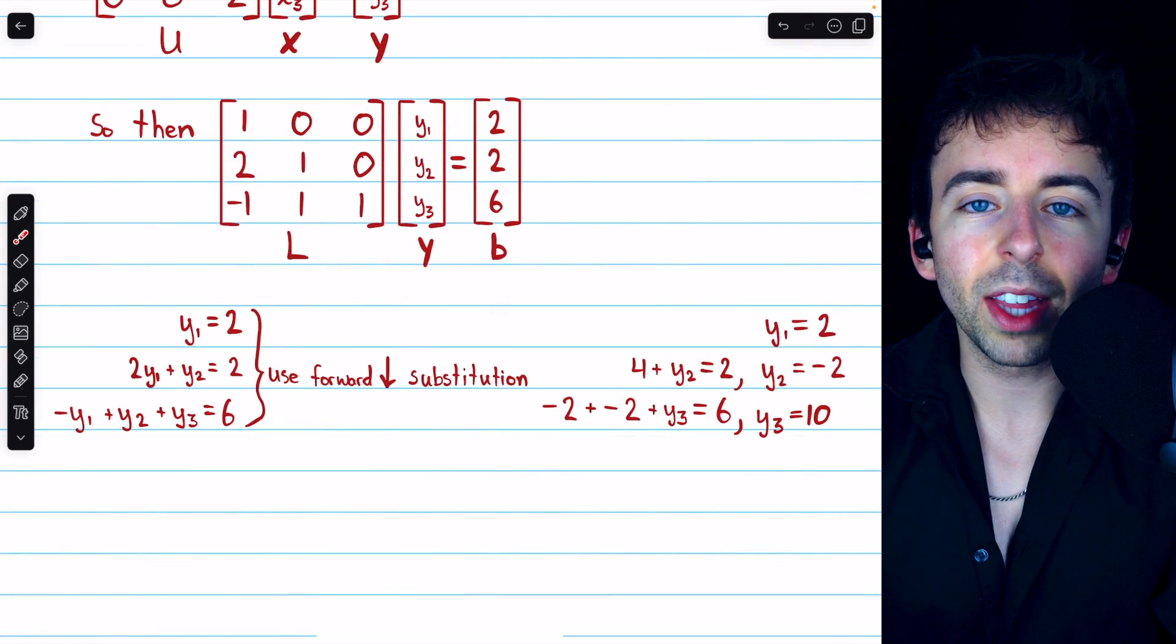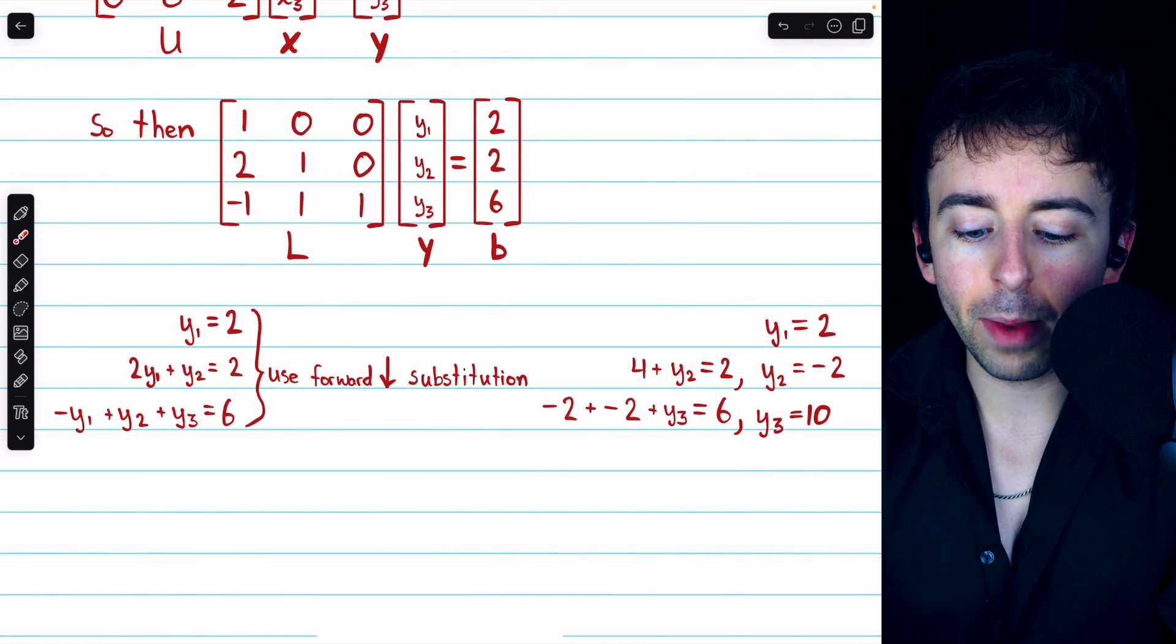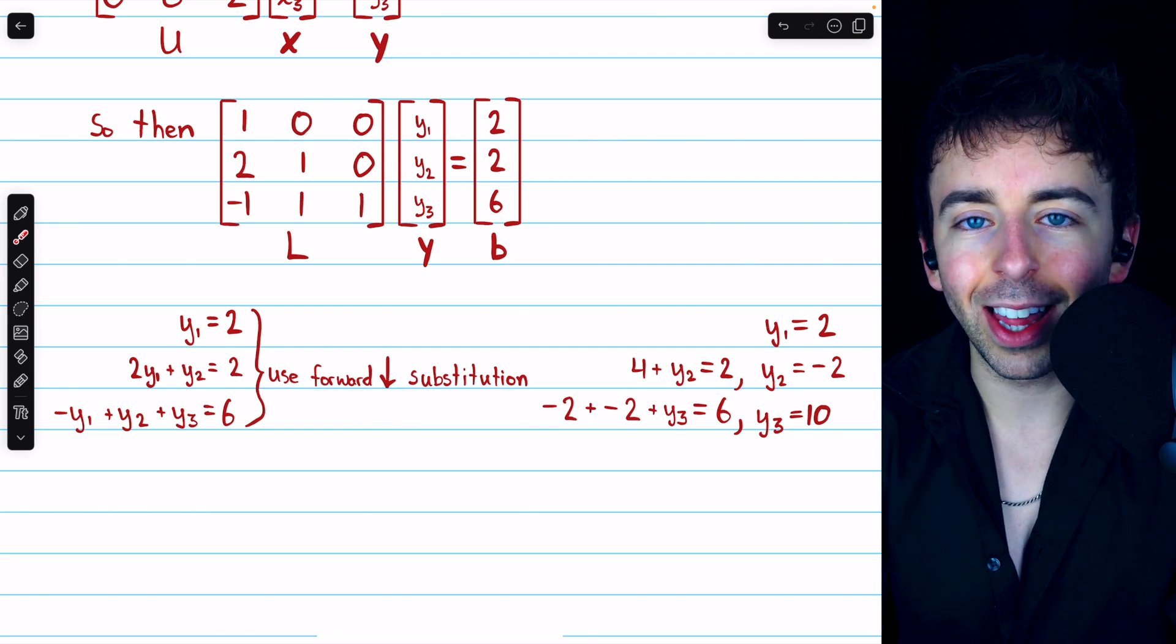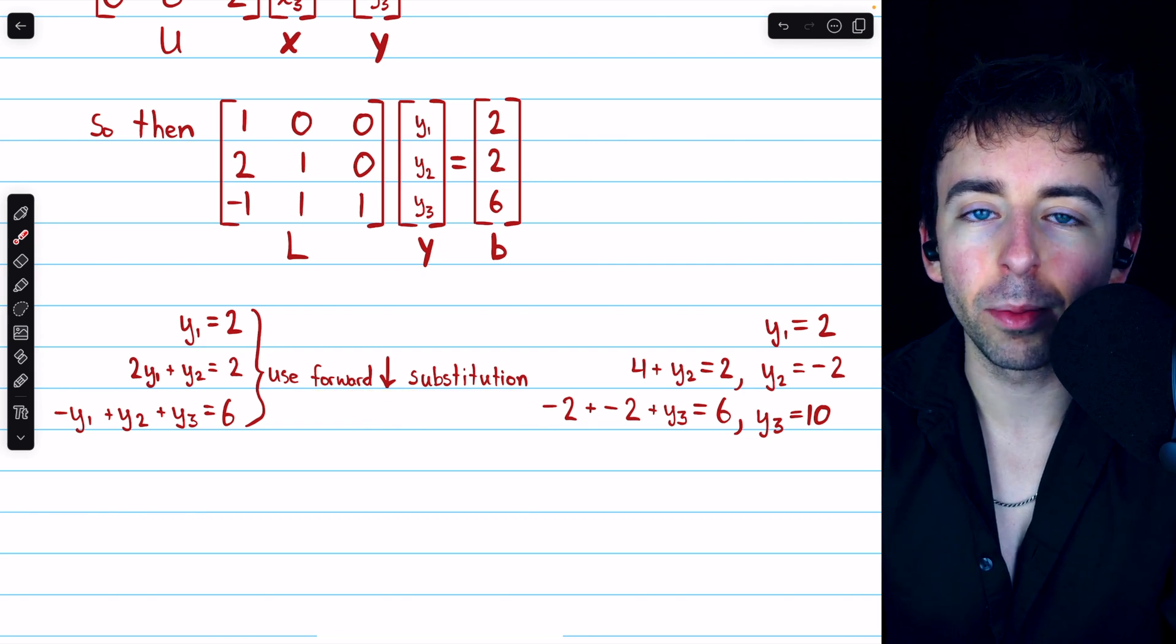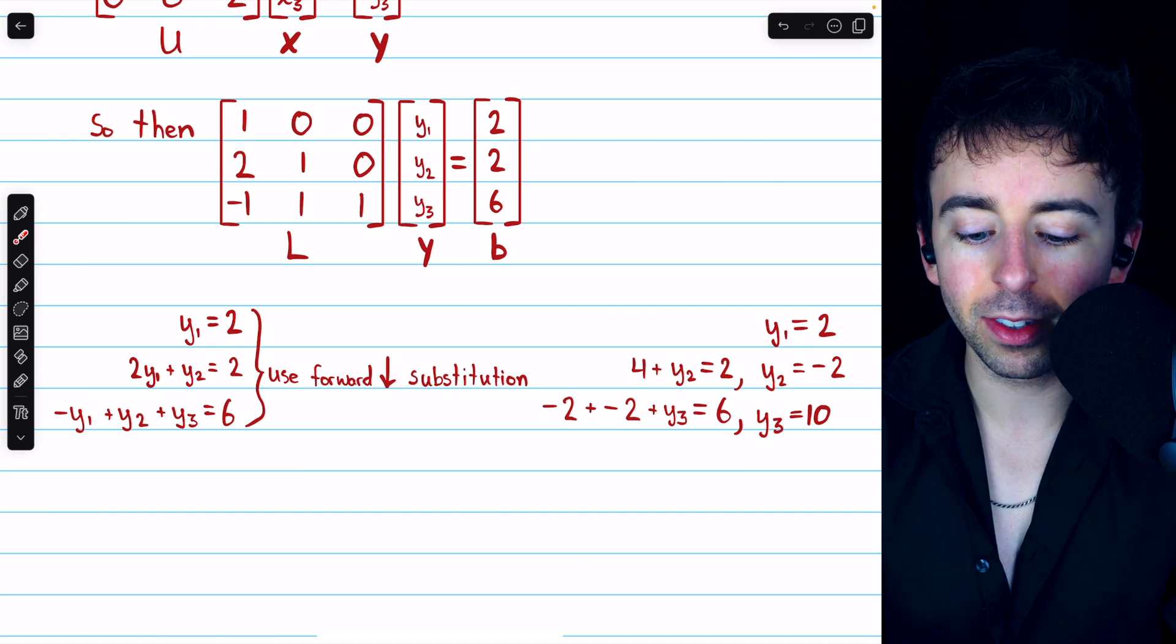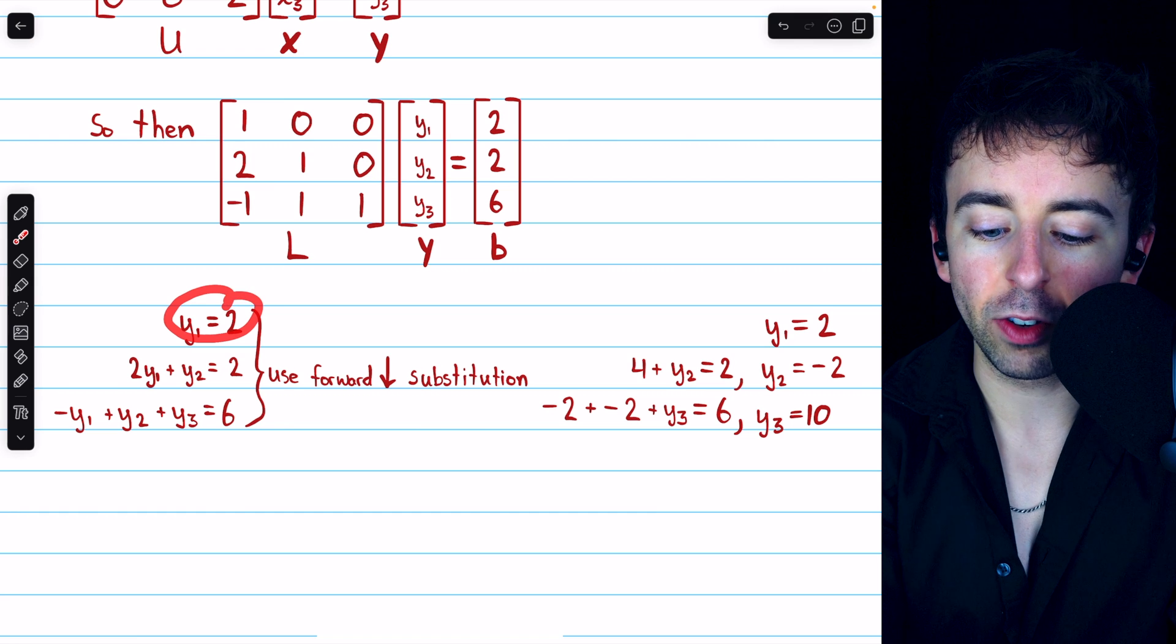To solve a system with a lower triangular coefficient matrix, we use what's called forward substitution. It's just like back substitution, if you recall that from Gaussian elimination, but it's going forward instead of backwards.